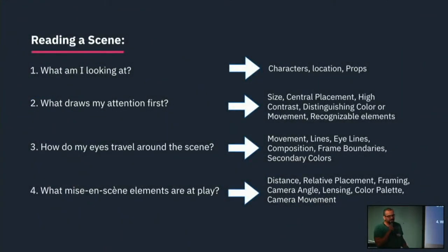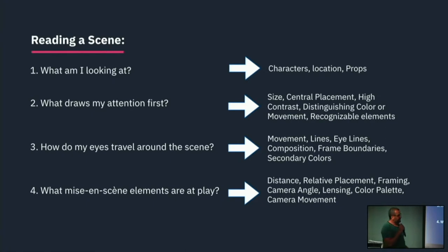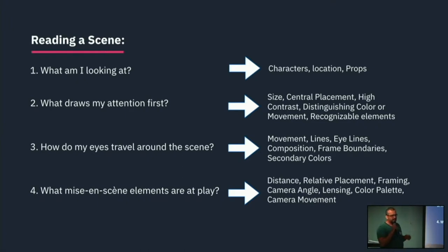So how do you read a scene? It's fundamentally very simple. First, you figure out what you're looking at — characters, props, locations — and interpret what that is. Then you think about what you notice first, because that's what the director wants you to see first. This could be because of size, central placement, color, or movement. Then you start thinking about how your eyes are moving around the frame — the director is also directing you where to look next.